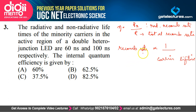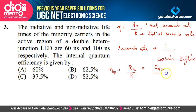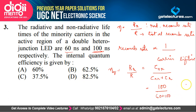Recombination rate is inversely proportional to carrier lifetime: more the carrier lifetime, less is the recombination rate. So quantum efficiency can be rewritten as non-radiative lifetime divided by total lifetime (radiative plus non-radiative). Non-radiative lifetime was given as 100 nanoseconds and radiative lifetime as 60 nanoseconds, so quantum efficiency equals 100 divided by (60 + 100), which equals 62.5 percent. The answer is option B.